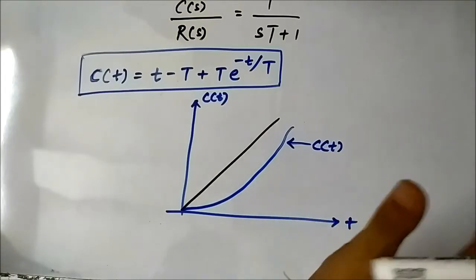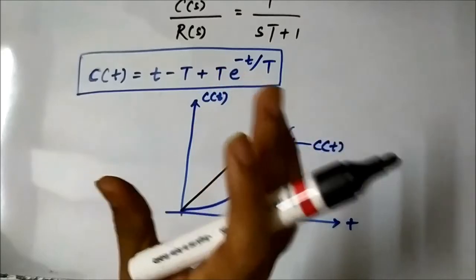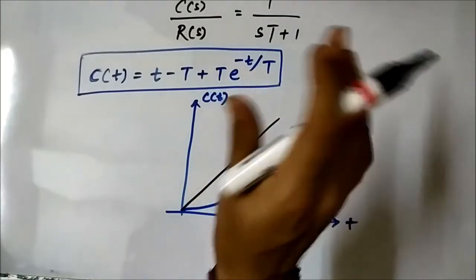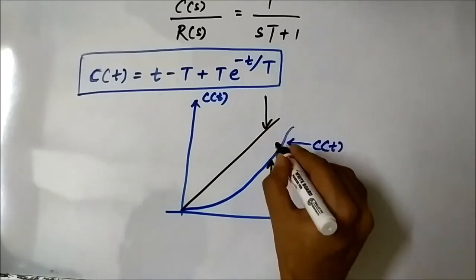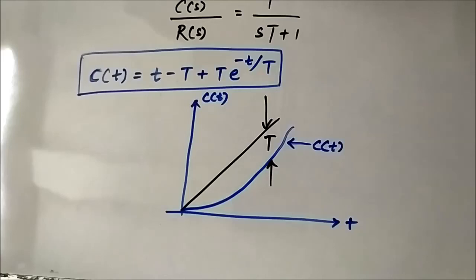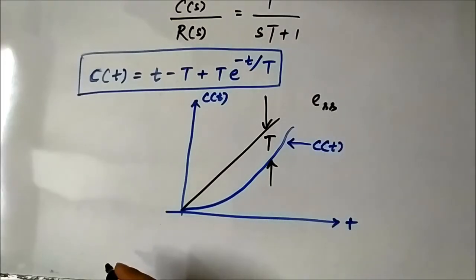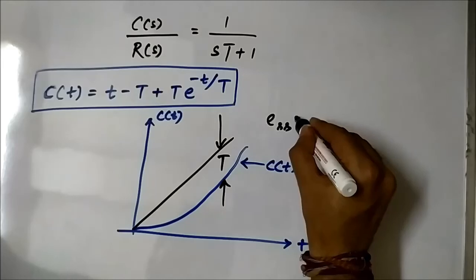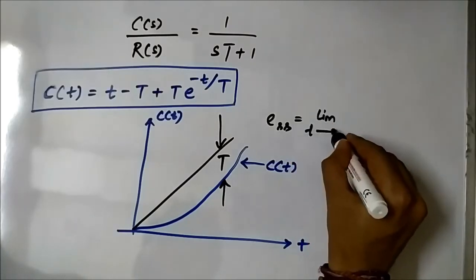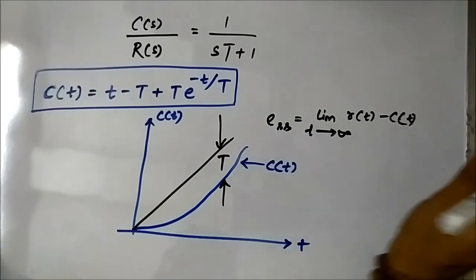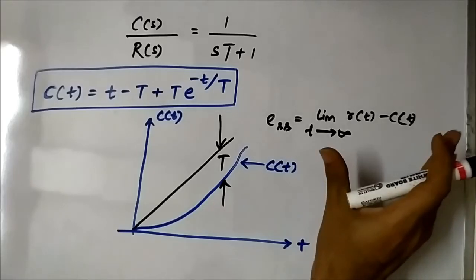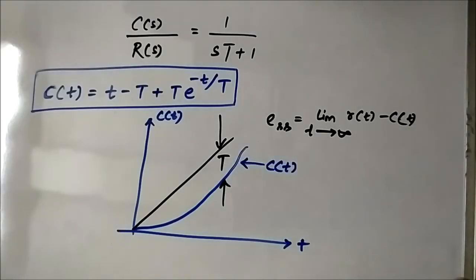Comparing the input ramp and the output, we can calculate the steady state error — the difference between the input and the steady state output. The steady state error is defined as the limit as t tends to infinity of [r(t) - c(t)]. We have not discussed this in detail yet, but in this case the steady state error equals T. We will discuss this concept further in a separate video.